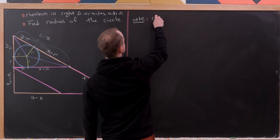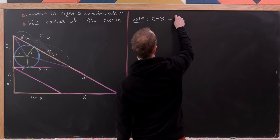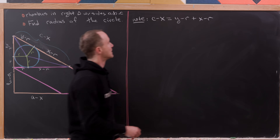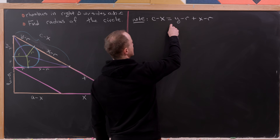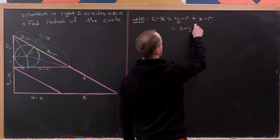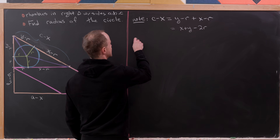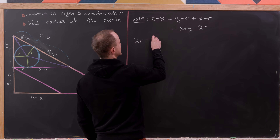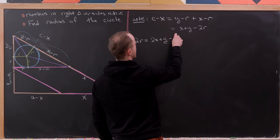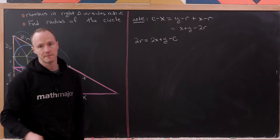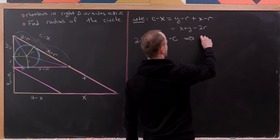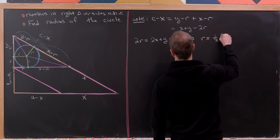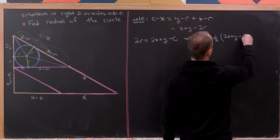Setting those equal: C minus X equals (Y minus R) plus (X minus R), which simplifies to X plus Y minus 2R. Rearranging gives 2R equals 2X plus Y minus C, so the radius is R equals one-half times (2X plus Y minus C).